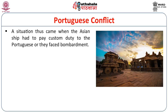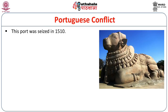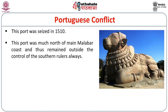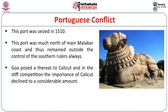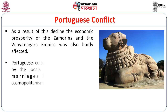Asian ships now had to pay custom duty to the Portuguese and faced bombardment in the Indian subcontinent itself. The main centre of Portuguese activity became Goa, which could never be fully controlled by the Vijayanagara Empire or any other indigenous power, including the Mughals. The port was seized in 1510 from the local rulers. Goa posed a threat to Calicut, and the importance of Calicut eventually declined considerably. As a result, the economic prosperity of the Zamorins and the Vijayanagara Empire was also badly affected.